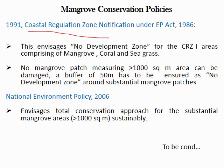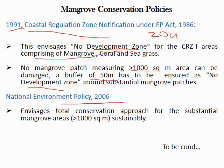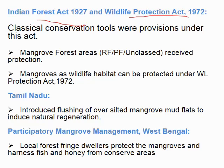The Coastal Regulation Zone notification was incorporated by Mrs. Rajiv Gandhi's government in 1991, and amended significantly in 2011. Under CRZ, the eco-sensitive zone — including mangrove, coral, and seagrass — is protected: no mangrove patch of 100 square meters or more can be damaged within a buffer of 15 meters, and no development is allowed in this zone. The Indian Forest Act and Wildlife Protection Act of 1972 also provide protection for mangrove habitat. The state government has also introduced participatory mangrove management in the Sundarbans area.